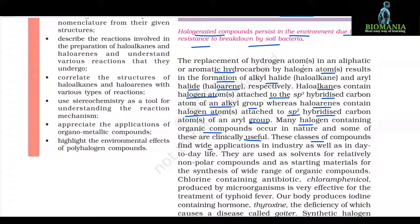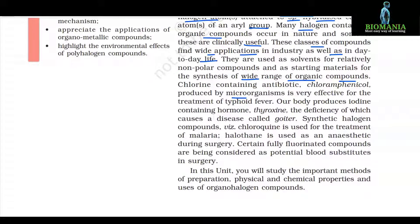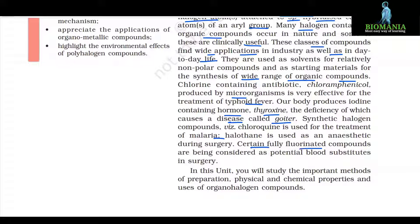These classes of compounds find wide application in industry as well as in day-to-day life. They are used as solvents for relatively non-polar compounds and as starting materials for the synthesis of a wide range of organic compounds. Chlorine-containing antibiotic chloramphenicol, produced by microorganisms, is very effective for the treatment of typhoid fever. Our body produces iodine-containing hormone thyroxine, the deficiency of which causes a disease called goiter. Synthetic halogen compound chloroquine is used for the treatment of malaria, and halothane is used as an anesthetic during surgery. Certain fully fluorinated compounds are being considered as potential blood substitutes in surgery.